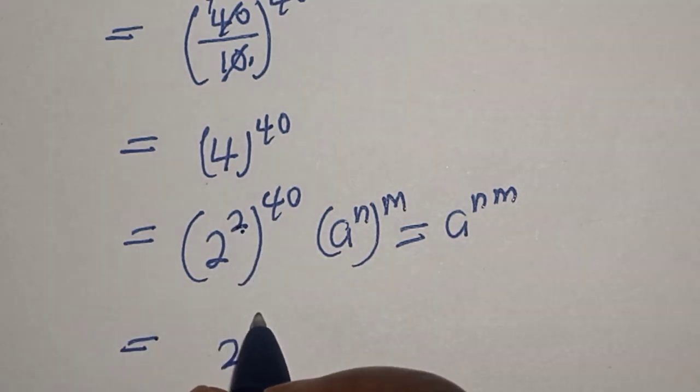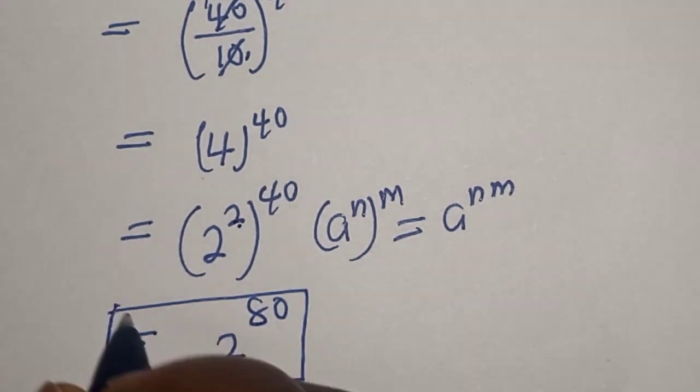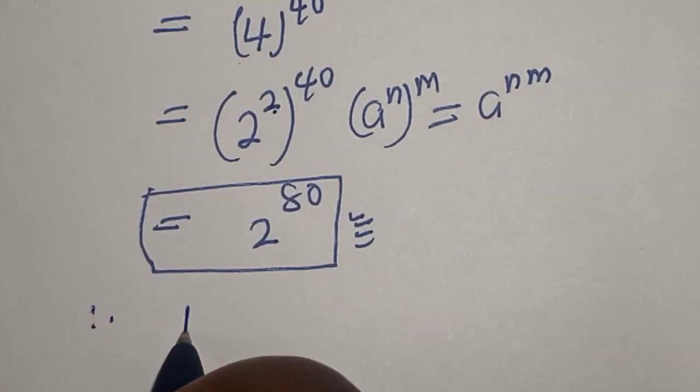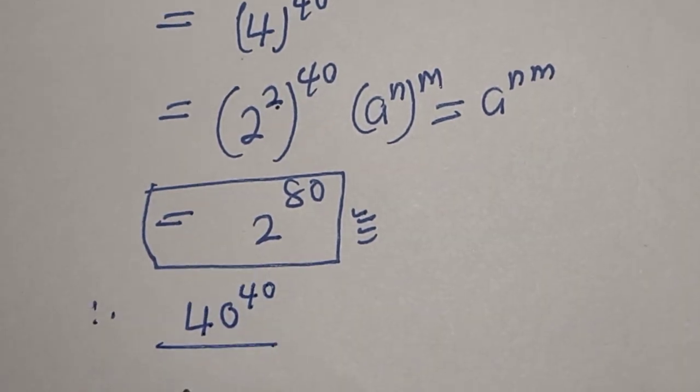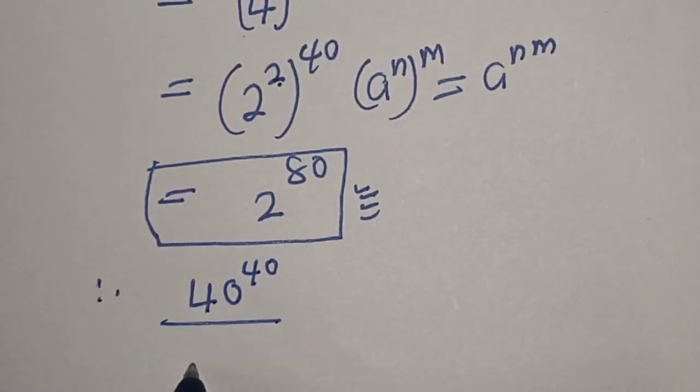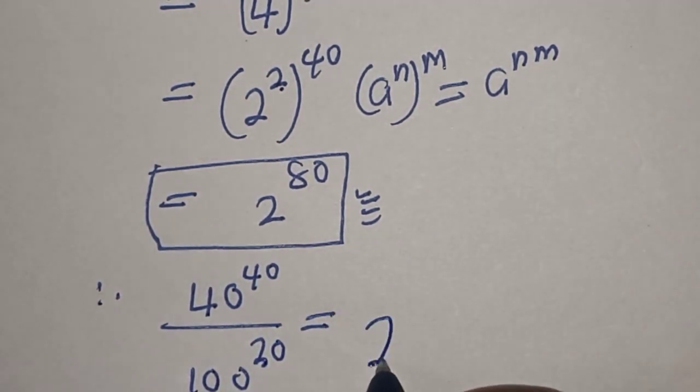times 2 times 40, that is 80, and that is our final answer. Therefore, 40 to the power of 40 divided by 100 to the power of 20 is equal to 2 to the power of 80.